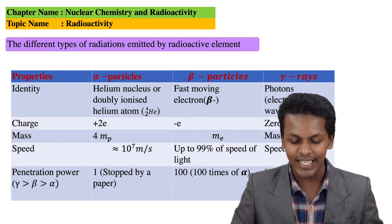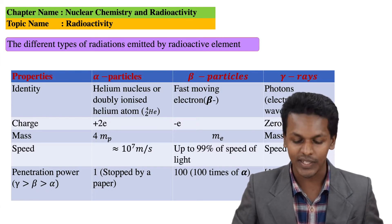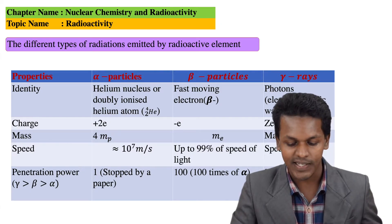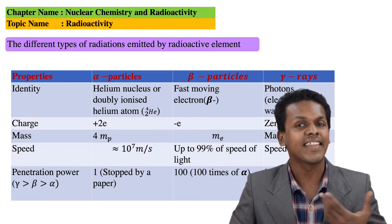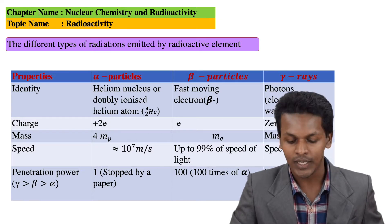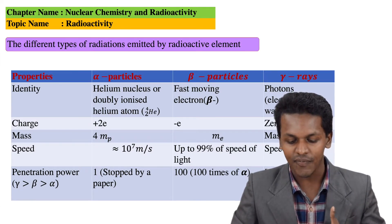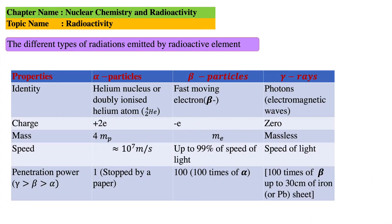Talking about the identity of the alpha particles, it has been found that alpha particles are nothing but the helium nucleus, having an atomic number of 2 and an atomic mass of 4. Beta particles are fast moving electrons, and gamma radiation are nothing but electromagnetic waves, which are essentially photons.